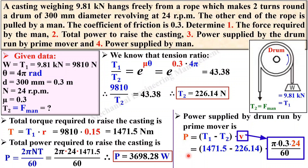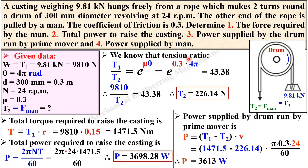Now we can find the power. This is the third answer: power supplied by the drum run by the prime mover.